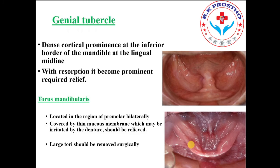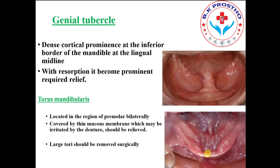Torus mandibularis is located in the region of the premolars bilaterally on the lingual side. It is covered by thin mucous membrane which may be irritated by the dentures and must be relieved. If the tori are large in size with undercuts that interfere with the extension of the dentures, surgical removal of the tori is required; otherwise, relief must be provided at the area of the tori.